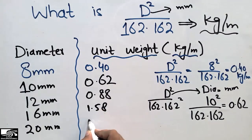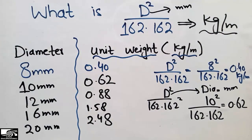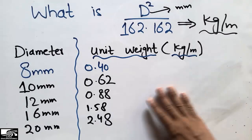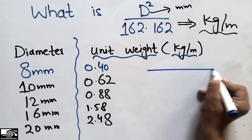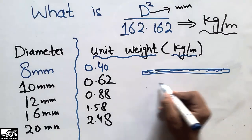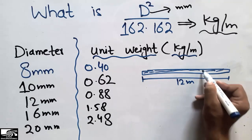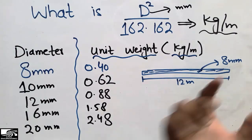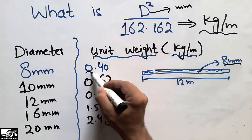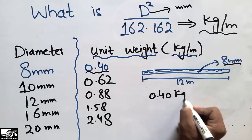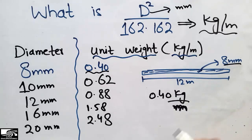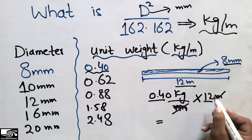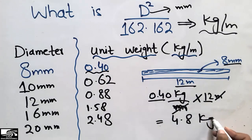Now, how do we find the total weight of a steel bar if we are given its length? For example, suppose we have an 8 millimeter bar with a length of 12 meters. We know the unit weight of the 8mm bar is 0.40 kg/m. Multiplying 0.40 kg/m by 12 meters, the meter units cancel and we get 4.8 kilograms — that is the total weight of this steel bar.